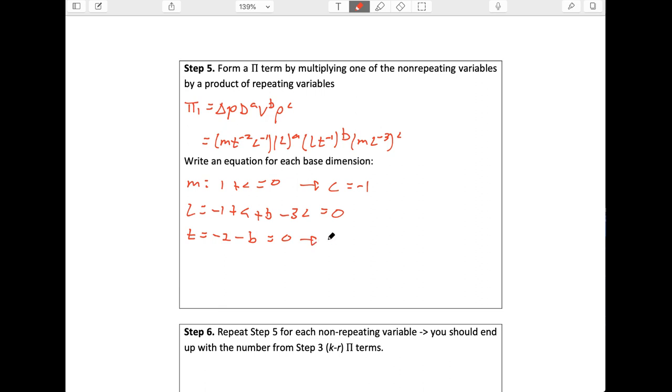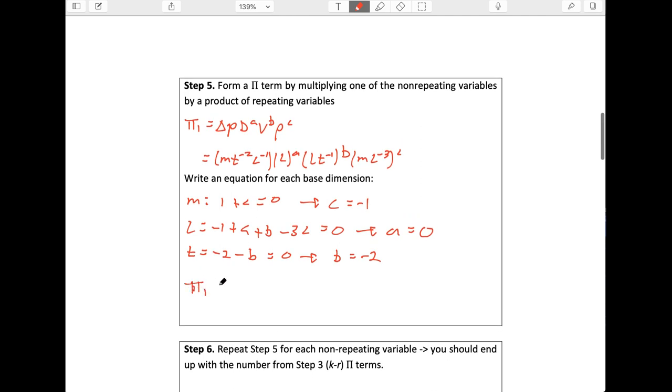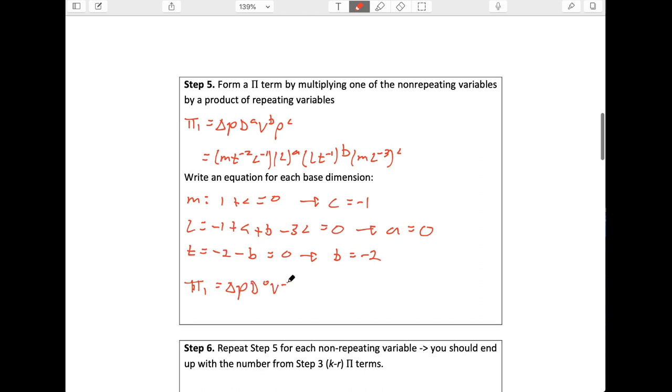All right, so we can solve this one directly, and it gives us that C is equal to minus one. We could solve this one, and it tells us that B is equal to minus two. And we take both of those and sub them in, and it tells us that A is actually equal to zero. And so our first pi term then, pi one, is equal to delta P, D to the zero, V to the minus two, and rho to the minus one, which we could write as delta P over rho V squared.